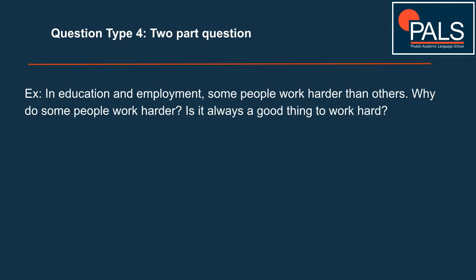The final question type is the two-part question. This throws many students off when they encounter it in the real test. Many students practice opinion questions, discussion questions, advantages and disadvantages, but perhaps don't practice the two-part question as much. It doesn't come up quite as often, but it's very sensible to know what it is and how to answer it. Example: 'In education and employment, some people work harder than others. Why do some people work harder? Is it always a good thing to work hard?' You've got a statement and then two questions. Question one becomes your body one; question two becomes your body two. That's the two-part question.